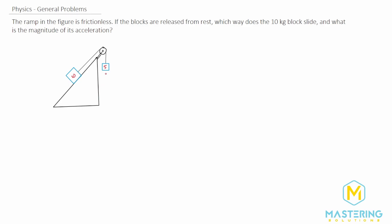Let's sum the forces. For block one, the smaller one, we have weight coming down and tension going up. For block two, we'll use a tilted grid, so the x-axis runs along the ramp and the y-axis is perpendicular. The normal force is perpendicular to the surface, weight goes straight down, and the ramp angle is 40 degrees — so that angle in the component diagram is also 40 degrees. Tension acts along the ramp, and since the ramp is frictionless, those are all the forces.